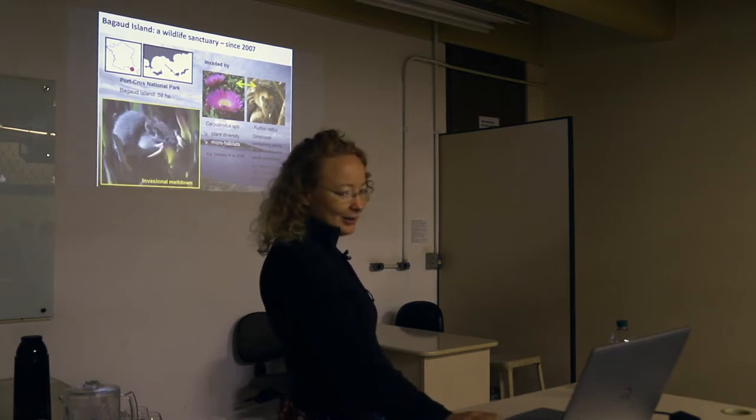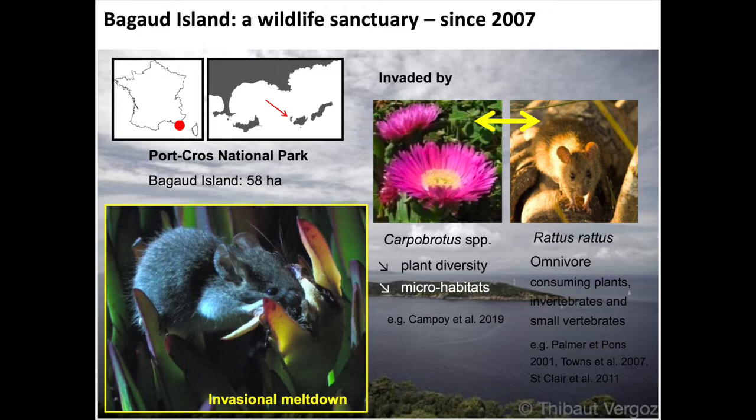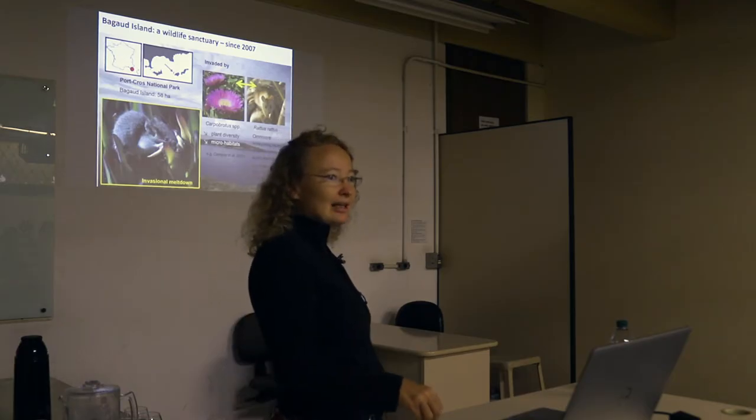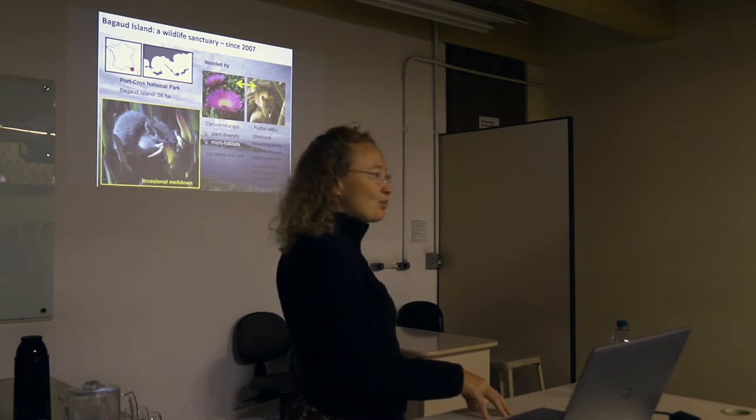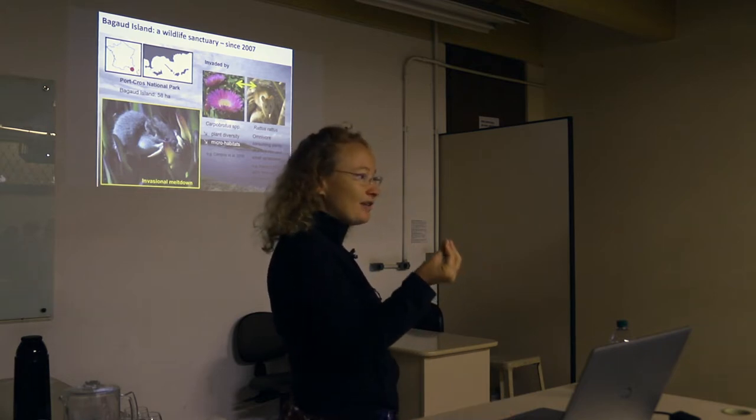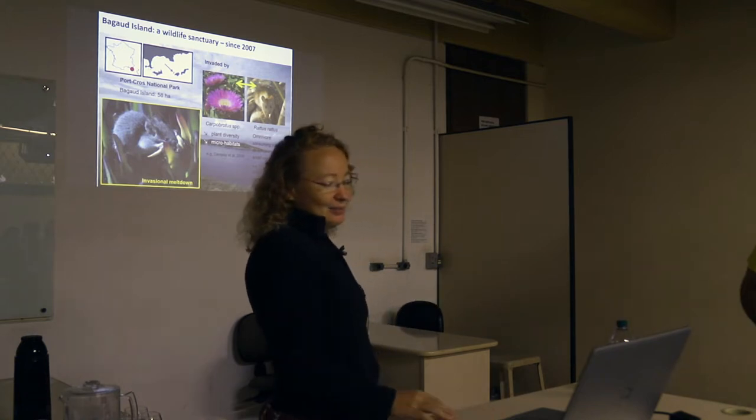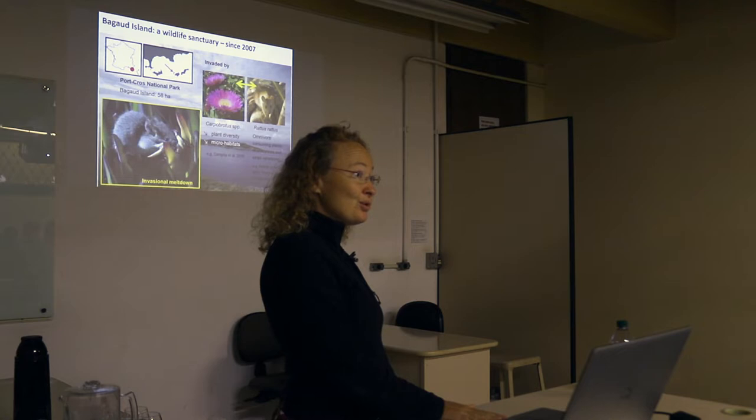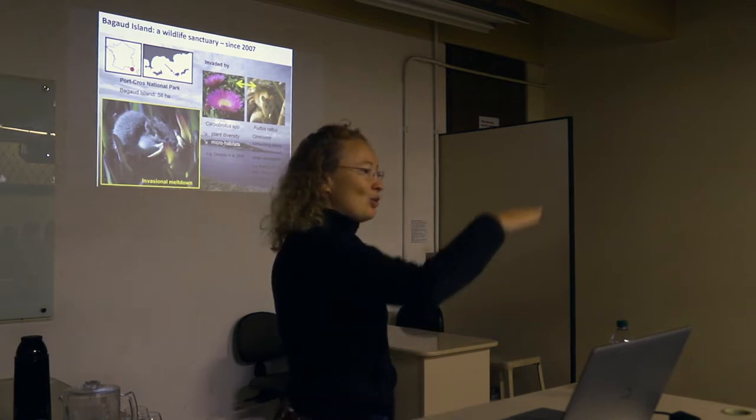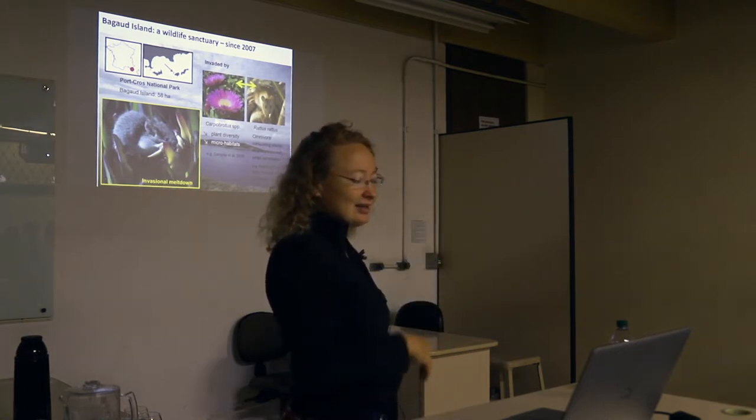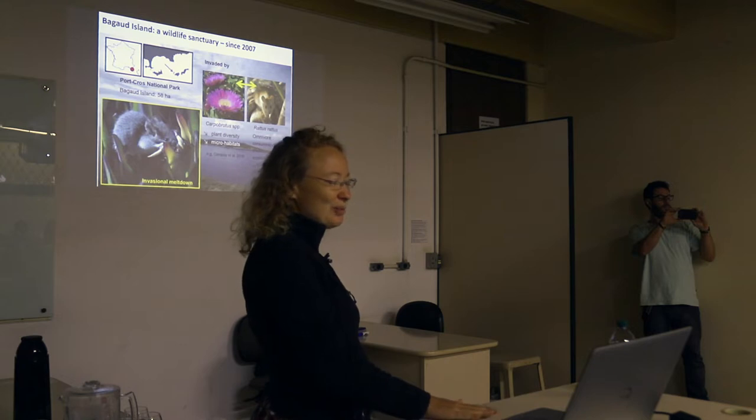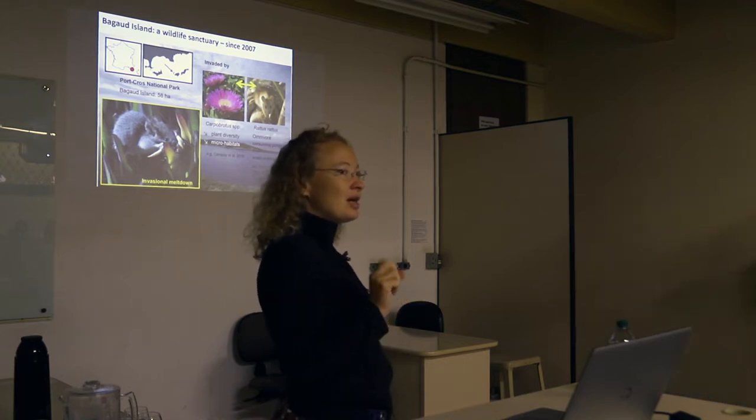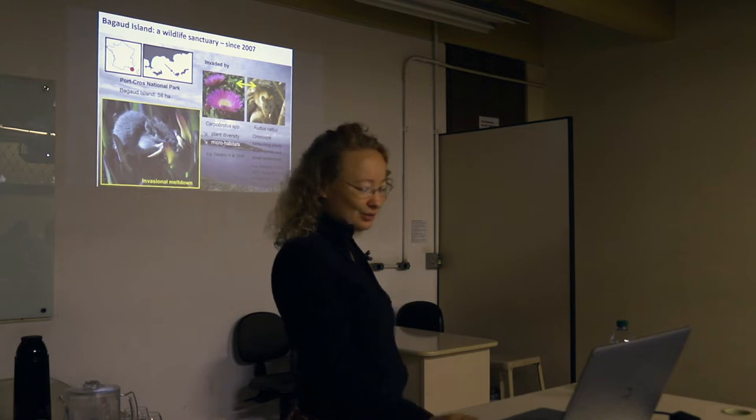On this island, the rat was eating a lot of the Carpobrotus fruits because there's no water on the island, no spring or anything, no small rivers. So the only source of water are plants, and they were eating a lot of the Carpobrotus fruits and leaves because they're really fleshy and full of water. Because of that, it's also helping the Carpobrotus to disperse because they eat the seed and they go poop somewhere else, and that disperses the seeds but that also increases germination. That's what's called an invasional meltdown, when two invasive species are helping each other to increase their cover or spread.